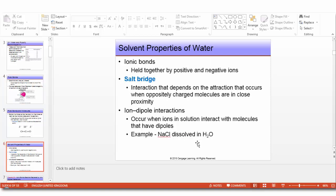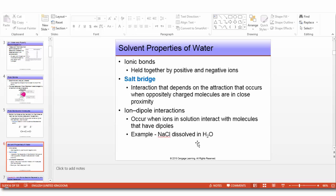Now, what about solvent properties of water? Why do some chemicals dissolve in water while others do not? Let's talk about different types of bonds. Ionic bonds are held together by positive and negative ends. Salt bridges are interactions that depend on the attraction that occurs when oppositely charged molecules are in close proximity. Ion-dipole interactions occur when ions in solution interact with molecules that have dipoles, for example, NaCl dissolved in water.